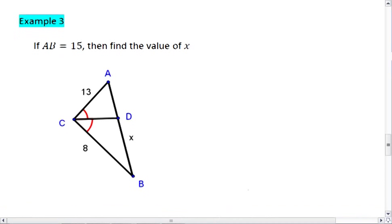For this example, we're told that the entire length AB is 15. This means that AD is 15 minus X, since the whole length is 15 and this part of the 15 is X.